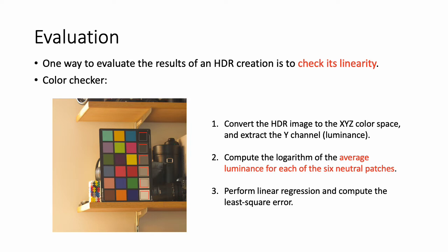Then, how can we evaluate HDR images in a quantitative way? One way to evaluate the results is to check its linearity by using color tracker. First, convert the HDR image to the XYZ color space and extract the Y channel, luminance. Second, compute the logarithm of the average luminance for each of the six neutral patches. Third, perform linear regression and compute the least-square error.